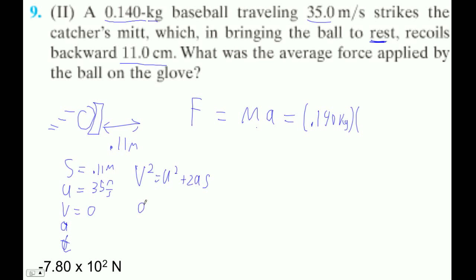So therefore, the acceleration is V squared minus U squared over 2S. So that is 0 squared minus 35 squared over 2 times 0.11. Let's try that with the calculator.